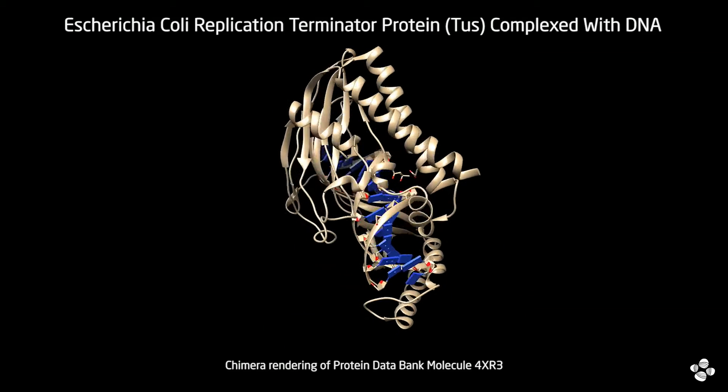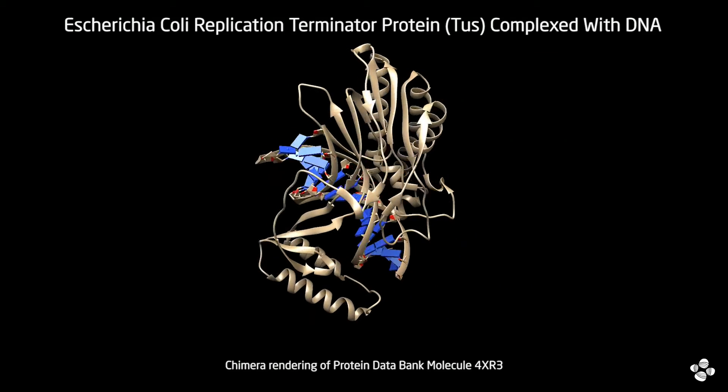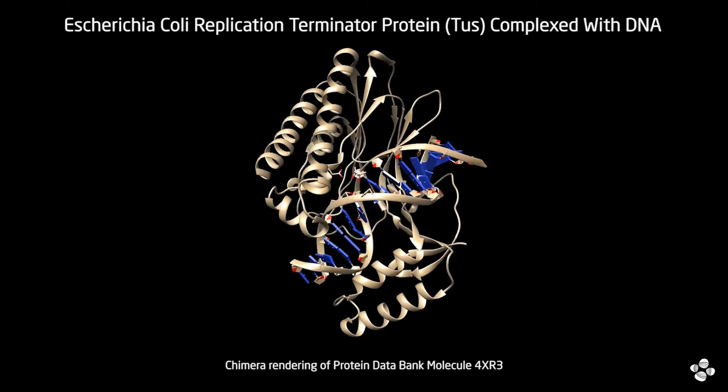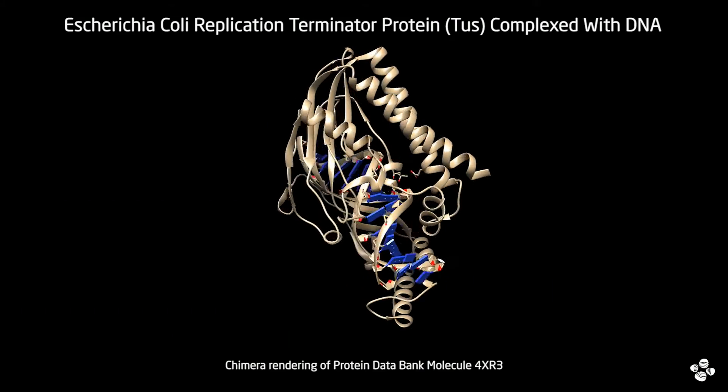This is one of the most tightly bound monomeric proteins to DNA. Now, this monomeric protein is able to stop the replication fork permanently. However, inside the cell, it can stop the forks only with 50 percent efficiency. In the other 50 percent, the replication machinery just passes by and never stops. So, we wanted to understand why this TUS-TER barrier protein fails 50 percent of the time.